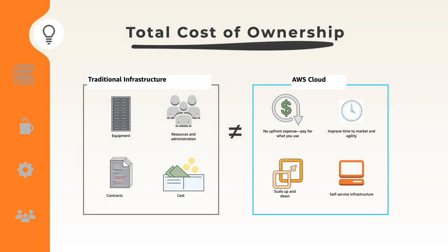Let us move on to Total Cost of Ownership (TCO). TCO is a financial estimate to help identify the direct and indirect costs of a system. If a customer wants to migrate their business to the cloud, you can use the TCO calculator to provide a side-by-side comparison between the cost of running a system in an on-premises data center versus running it in AWS. The TCO compares the cost of running an entire infrastructure on-premises versus on AWS cloud, and you can use it to budget and build the business case for moving to the cloud.